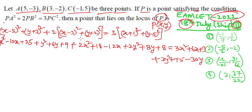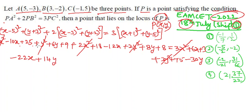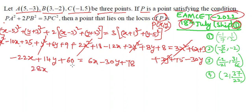Both sides: x² + 2x² = 3x² — cancelled. And y² + 2y² = 3y² — cancelled. Remaining: −10x−12x = −22x, 6y+8y = 14y, constants 25+9+18+8 = 60 on left side. Right side: 6x−30y+78. Rearranging: 6x+22x = 28x, −30y−14y = −44y, 78−60 = 18, giving 28x−44y+18 = 0. Taking 2 common: 14x−22y+9 = 0.